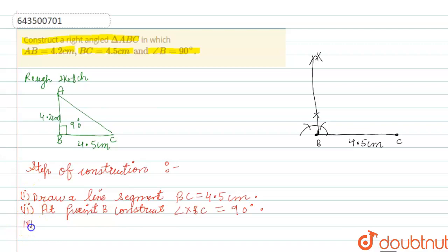now step 3: At point B, construct an arc of 4.2 cm cutting ray XB at A.